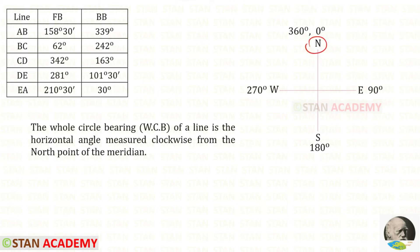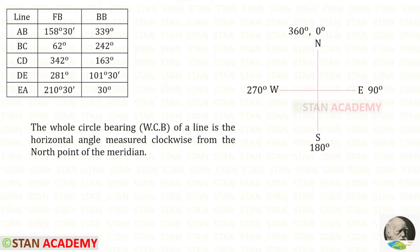In the whole circle bearing system, north is 0 degrees, east is 90 degrees, south is 180 degrees, west is 270 degrees, and back to north is 360 degrees. So all readings are taken from the north in the clockwise direction.